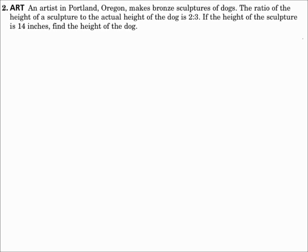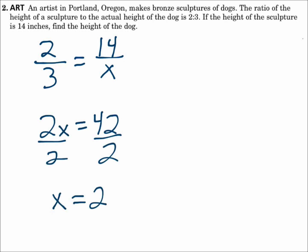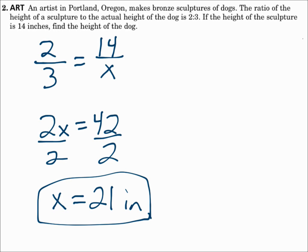An artist in Portland, Oregon, makes bronze sculptures of dogs. The ratio of the height of a sculpture to the actual height of the dog is 2 to 3. If the height of the sculpture is 14 inches, find the height of the dog. Here I'll need to make a proportion. Organize the proportion using the scale factor — the scale factor is 2 to 3, which is model over actual length. So that equals model (the sculpture) 14 inches over the real dog height, which we don't know. Cross multiply and solve: x is 21 inches. Since the sculpture was measured in inches, the real length will be in inches as well.